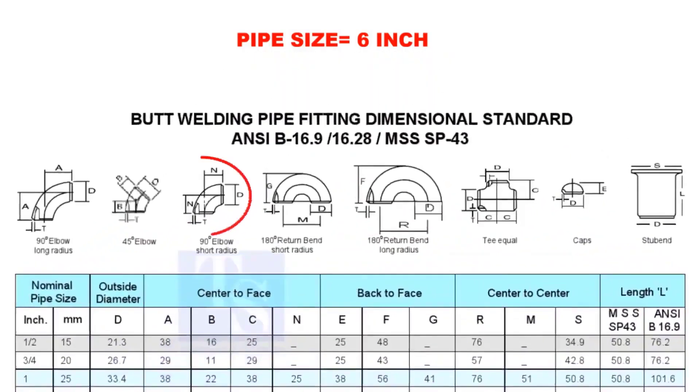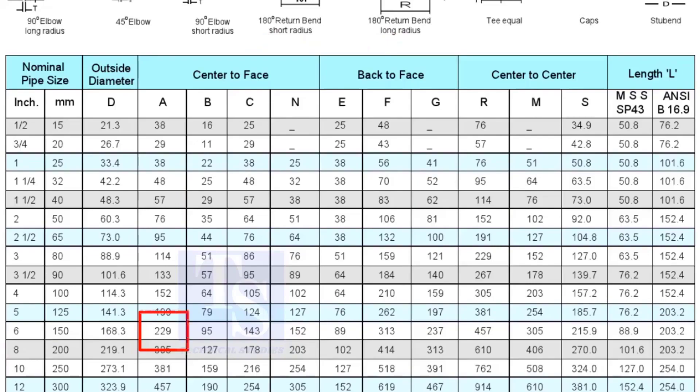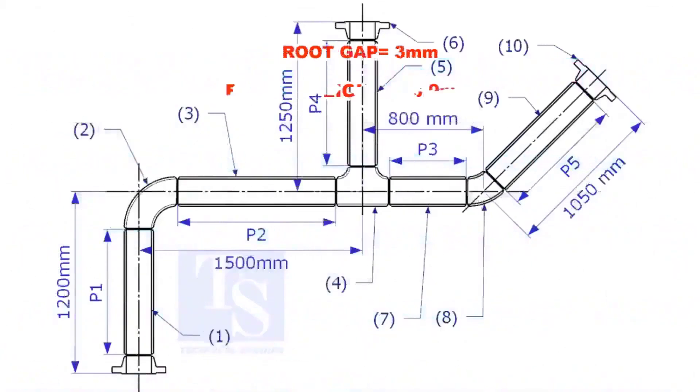Check the takeoff length of the elbow. It is 229mm. Assume the root gap is 3mm.